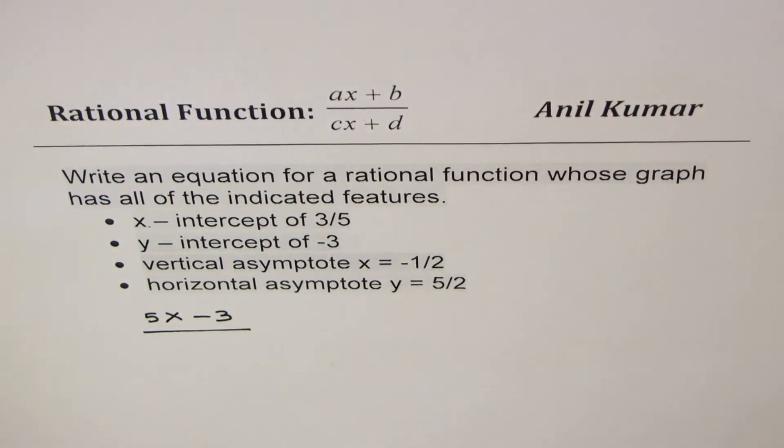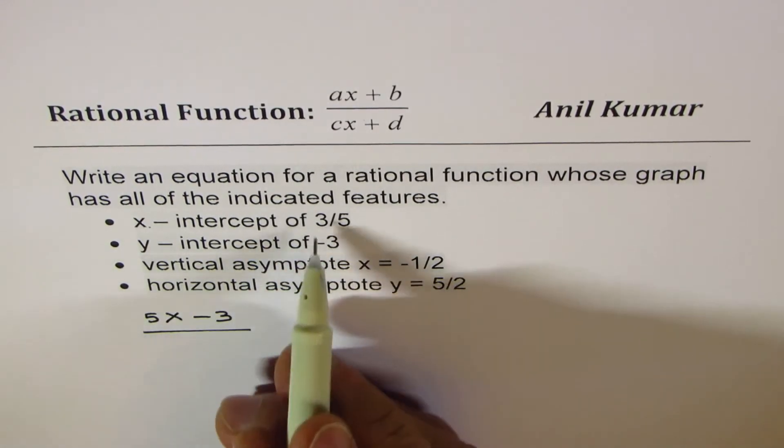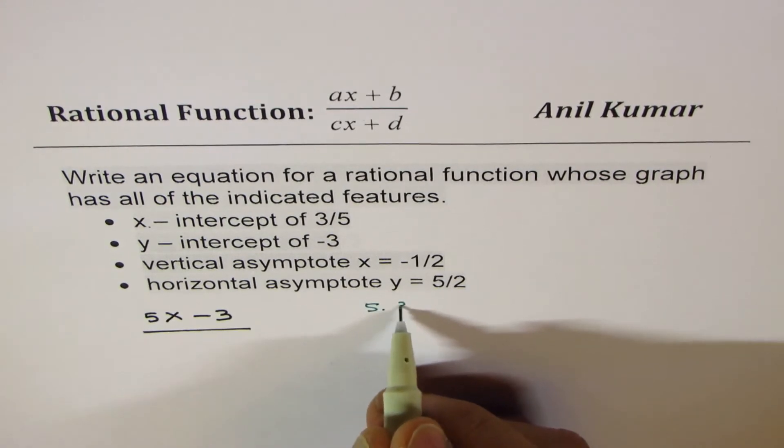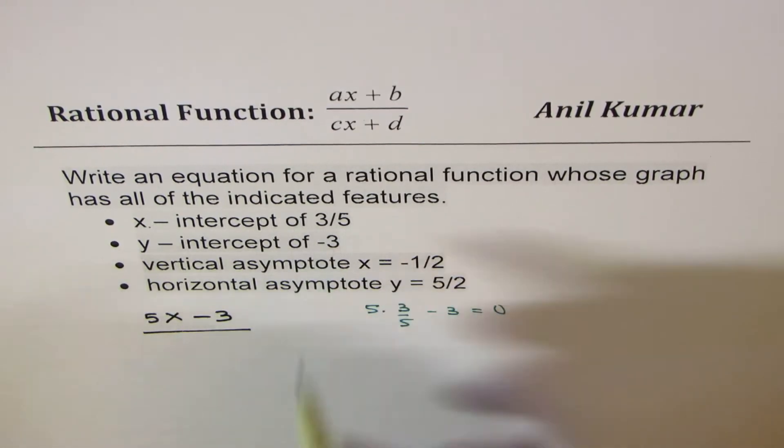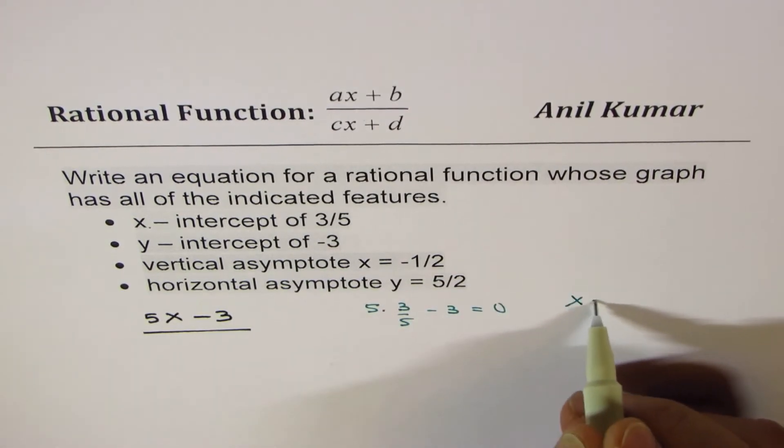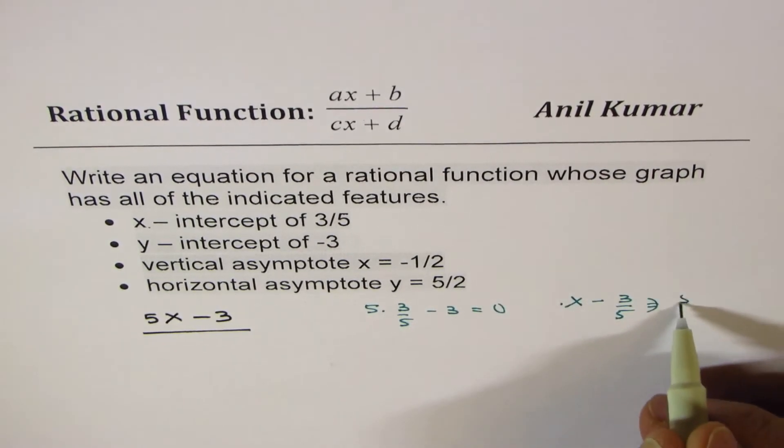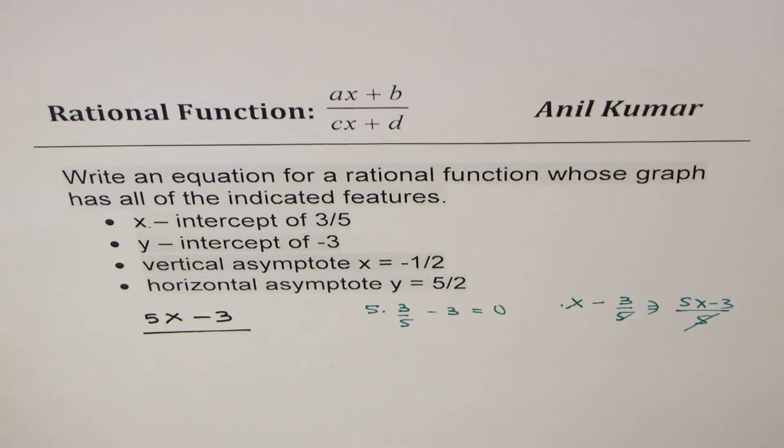Now you can check that this numerator will be 0 when x is 3 over 5. So you could see 5 times 3 over 5 minus 3 is 0. Or you could also think like this: x minus 3 over 5. So when you take common denominator, you will get 5x minus 3 over 5. Ignore this. Perfect. You get 5x minus 3. So these are different ways of thinking.